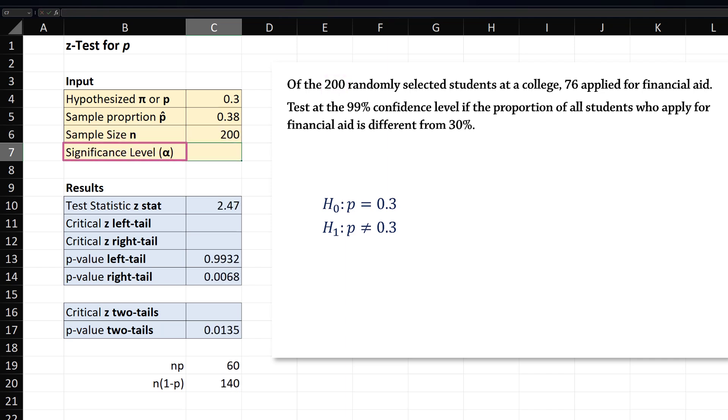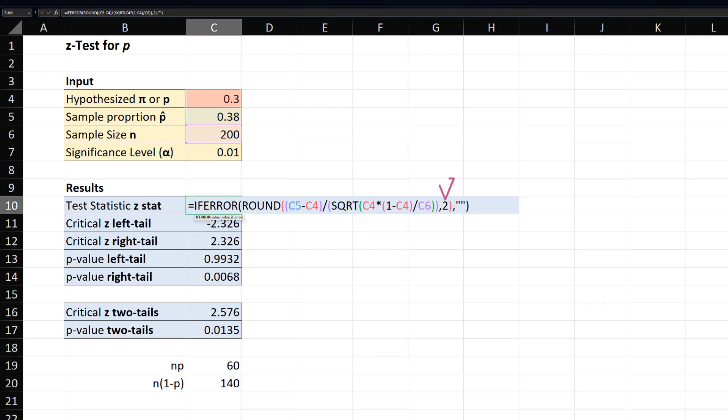And alpha, the significance level, is 1 minus confidence level, which gives 0.01. Note that the test statistic here is rounded to two decimal places. You can change it to your preferred number of decimal places by changing the two here.